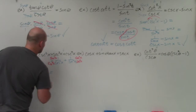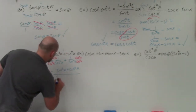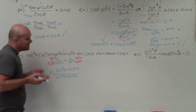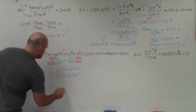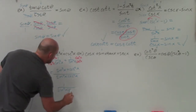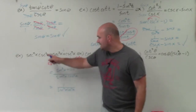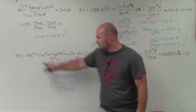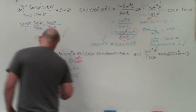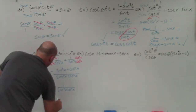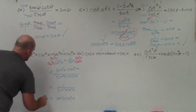Now I'm left with sine squared of x plus cosine squared of x, all over sine squared of x times cosine squared of x. By our Pythagorean identity, sine squared plus cosine squared equals 1, so I have 1 over sine squared of x times cosine squared of x. Rewriting: 1 over sine squared is cosecant squared, and 1 over cosine squared is secant squared. Sine times cosine is the same as cosine times sine, so you can swap the order, and you can see the problem is verified.